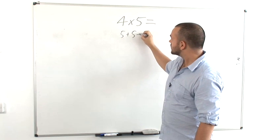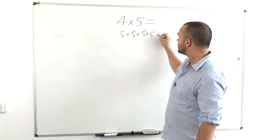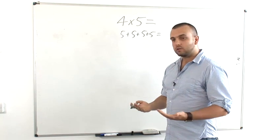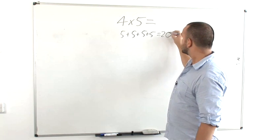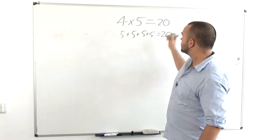And it can also be written as this: five plus five plus five plus five, which the child should be able to add together and come together to give twenty. And so four times five equals twenty.